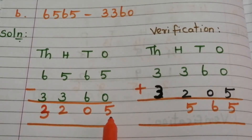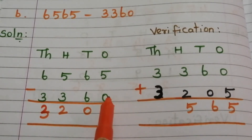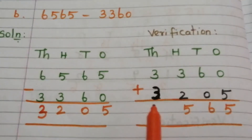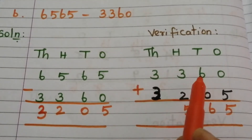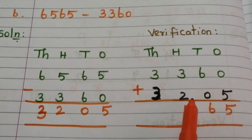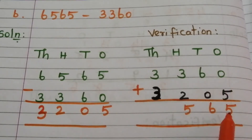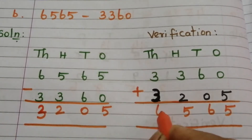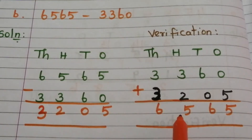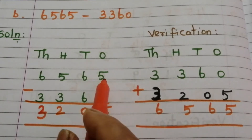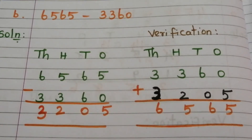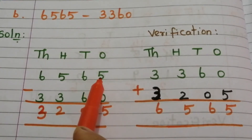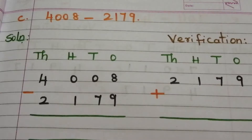To verify this answer we have to add this answer to the subtrahend. Writing the subtrahend and the answer: 5 plus 0 is 5, 6 plus 0 is 6, 3 plus 2 is 5, and 3 plus 3 is 6. This sum should be equal to the minuend — and here the sum is equivalent to the minuend, so our answer is correct.